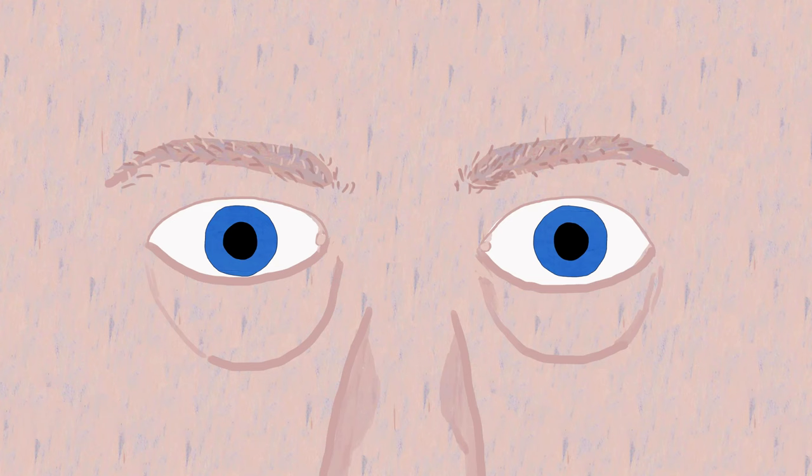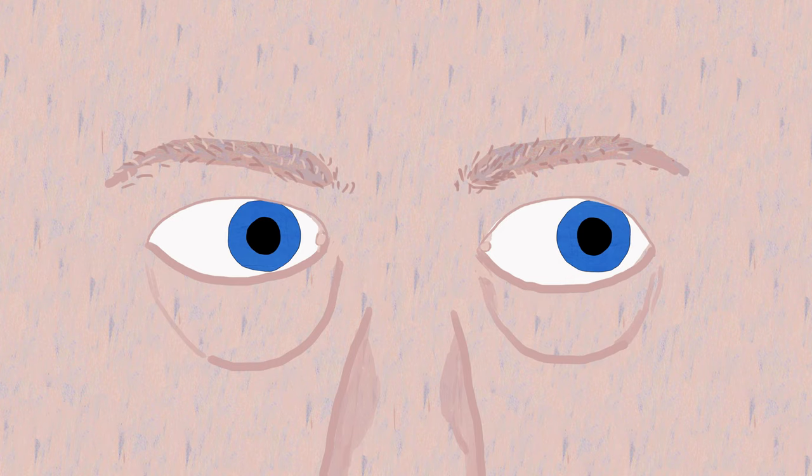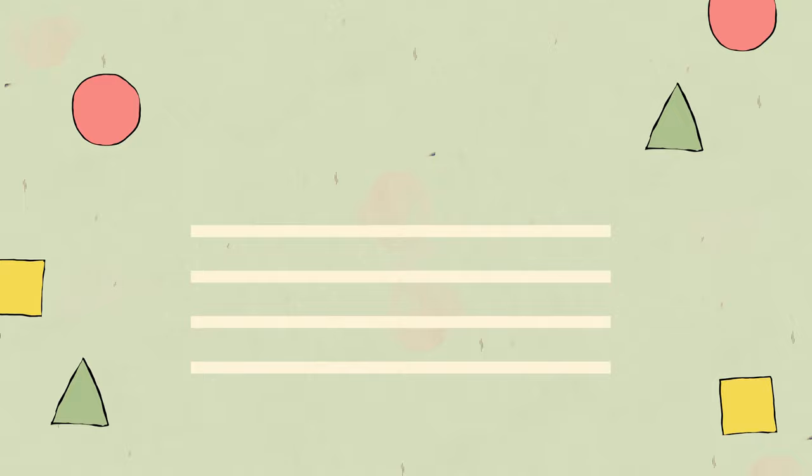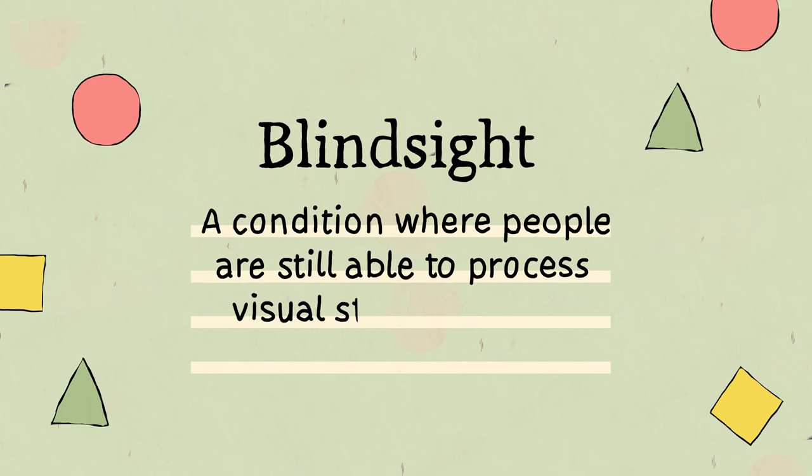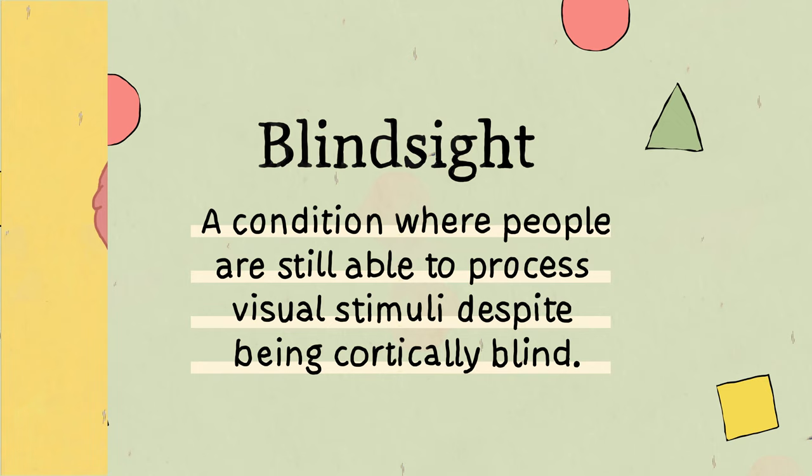This suggested that his patients could still see to some degree. You can imagine this not only stunned Weisskrantz, but his patients as well. This phenomenon we now call blindsight, a condition where people are still able to process visual stimuli, in some way, despite being cortically blind. That is, blindness due to damage to the primary visual cortex.